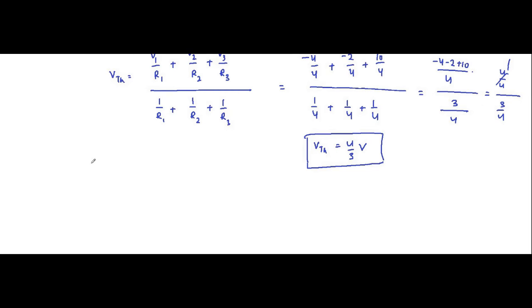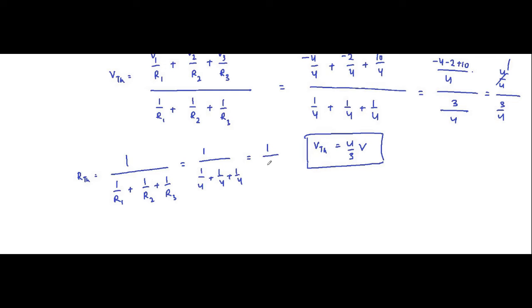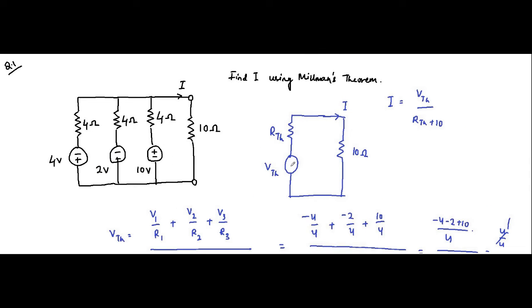RTH is simply R1 parallel R2 parallel R3, which equals 1 divided by (1/R1 plus 1/R2 plus 1/R3), equal to 1 divided by (1/4 plus 1/4 plus 1/4) which is 1 divided by 3/4. So RTH equals 4/3 ohms. We have VTH equal to 4/3 volt and RTH equal to 4/3 ohm.